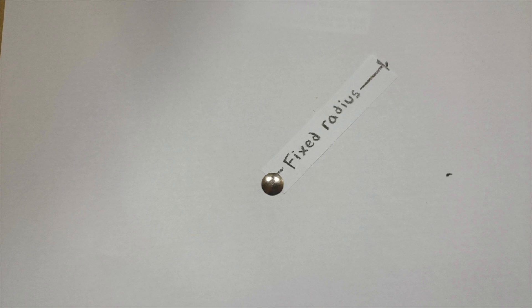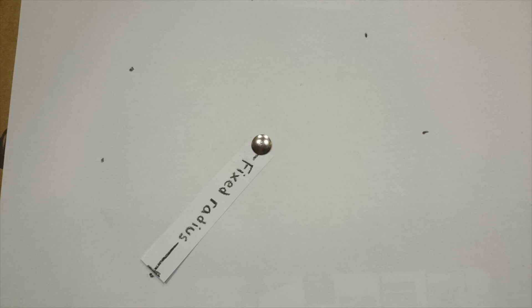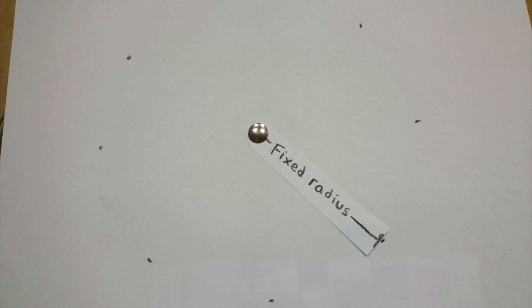If you remember, we parametrize a circle by taking a fixed radius and rotating that radius around a point. This interval, from 0 to 2π, will be the interval for our parameters.